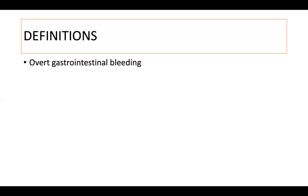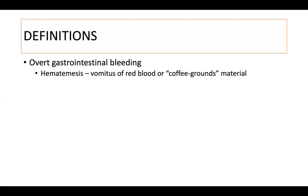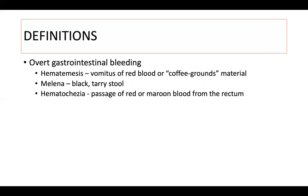Overt gastrointestinal bleeding means there is obvious evidence of bleeding. Under this are different conditions such as hematemesis, which means vomitus of red blood or coffee ground material; melena, when the patient passes black tarry stools; and hematochezia, which is the passage of red or maroon blood from the rectum. These three signs fall under overt gastrointestinal bleeding.